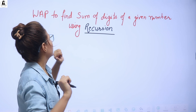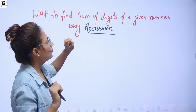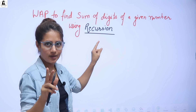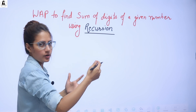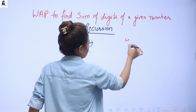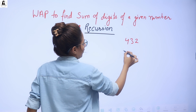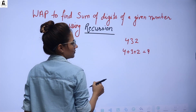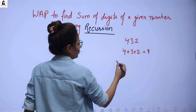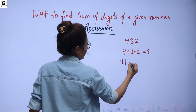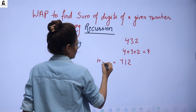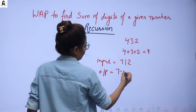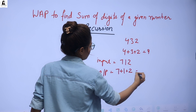What you have to do is write down a program to find the sum of digits of a given number using recursion. For example, if input is 432, then output should be 4 plus 3 plus 2, that is 9. If input is 712, then output should be 7 plus 1 plus 2, that is 10.